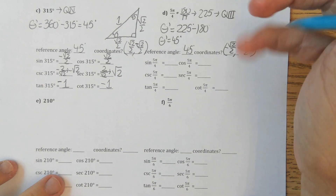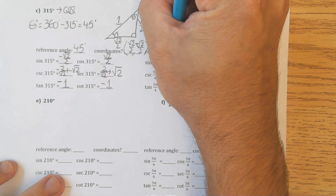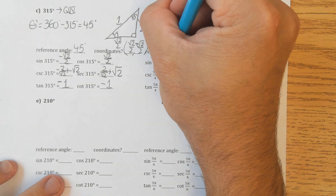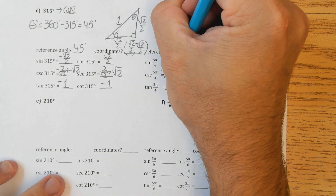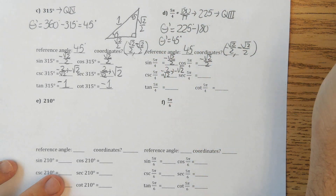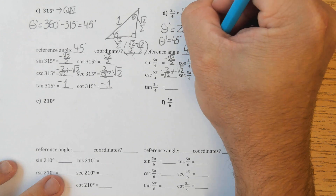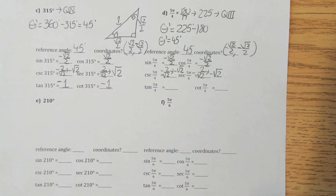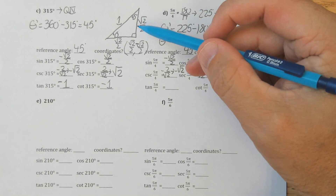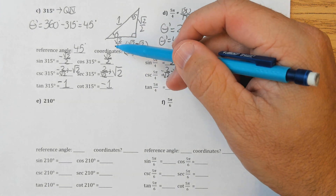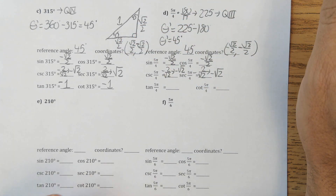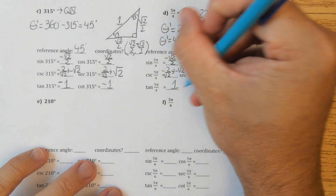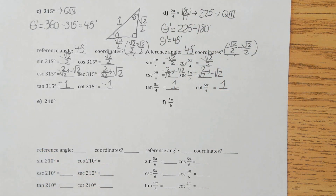Sine of 5π/4 equals the y value: negative root 2 over 2. Cosine equals the x value: negative root 2 over 2. Cosecant — flip — negative 2 over root 2, which rationalizes to negative root 2. Secant — flip cosine — also negative 2 over root 2, rationalizing to negative root 2. Tangent: negative root 2 over 2 divided by negative root 2 over 2 gives positive 1. Cotangent — flip — also positive 1.